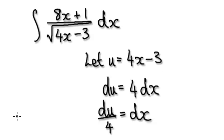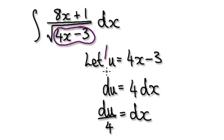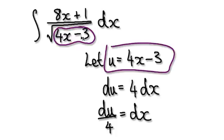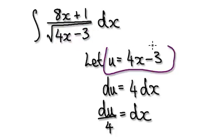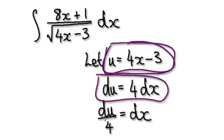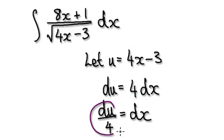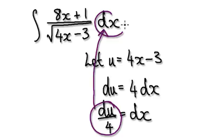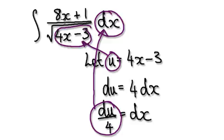So to do this, let u equal this thing here. There are several ways of doing this, so let u equal this thing here. If u equals this thing here, then du equals this and dx equals this. So our normal routine would be to put this into the dx and then put the u into this thing here.